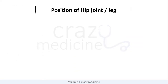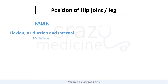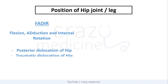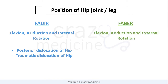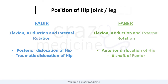Next is the position of the hip joint or leg. The first is FADIR, i.e., flexion, adduction, and internal rotation. This position is seen in posterior dislocation of the hip or traumatic dislocation of the hip. Another position is FABER, which is flexion, abduction, and external rotation. It is present in anterior dislocation of hip and fracture of the shaft of femur.